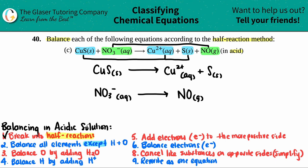First part done. Next, we have to balance all elements except hydrogen and oxygen — so I'm only looking at copper, sulfur, and nitrogen. I have one copper on the left and one on the right — balanced. One sulfur on each side — balanced. One nitrogen on each side — balanced. So this step was already done for us; we can skip over it.